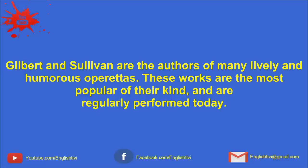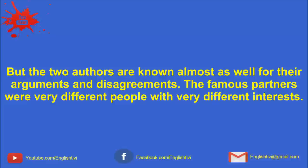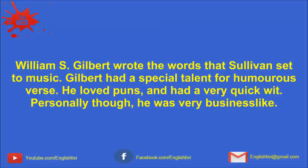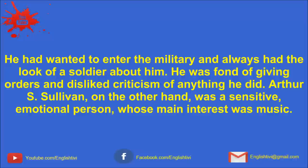Gilbert and Sullivan are the authors of many lively and humorous operettas. These works are the most popular of their kind and are regularly performed today. But the two authors are known almost as well for their arguments and disagreements. The famous partners were very different people with very different interests. William S. Gilbert wrote the words that Sullivan set to music. Gilbert had a special talent for humorous verse. He loved puns and had a very quick wit. Personally, though, he was very businesslike. He had wanted to enter the military and always had the look of a soldier about him.